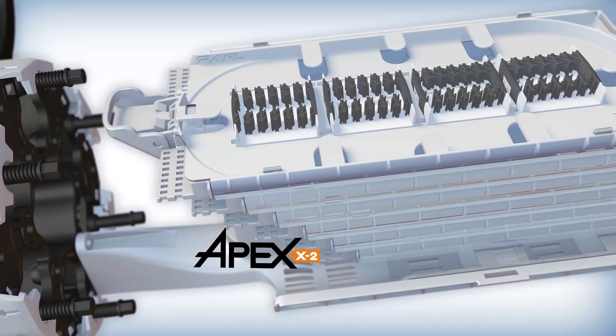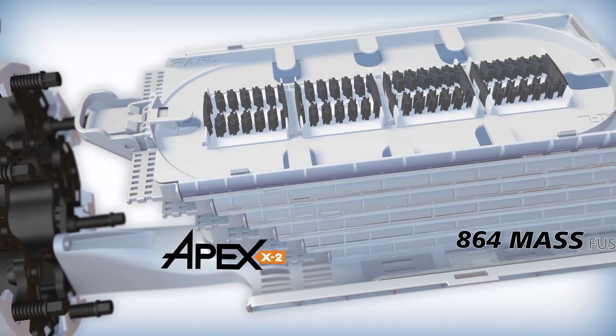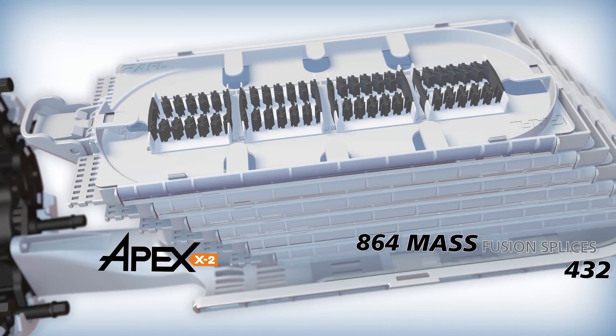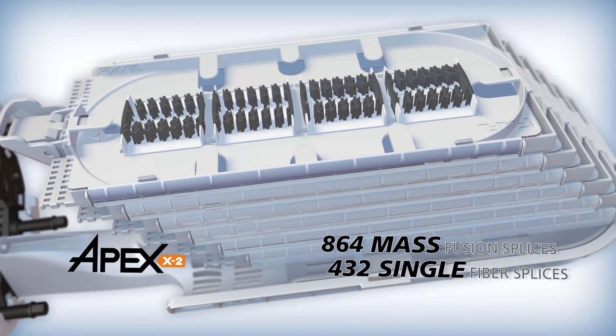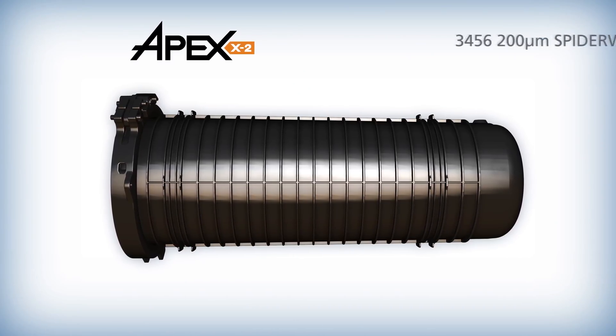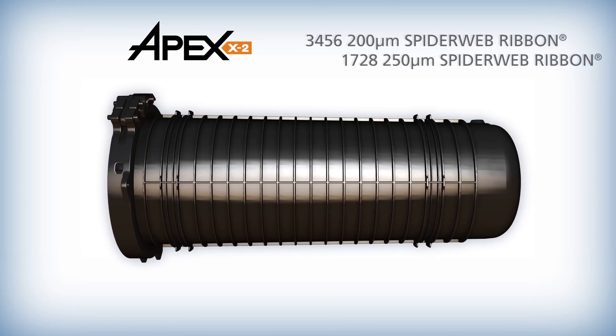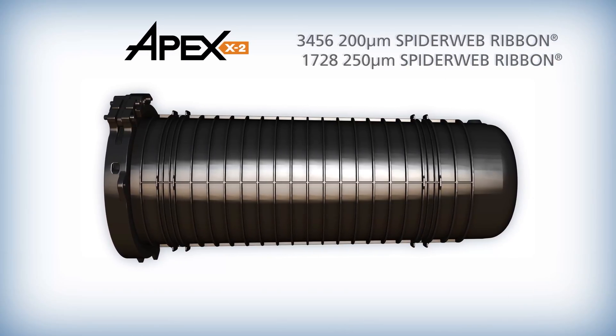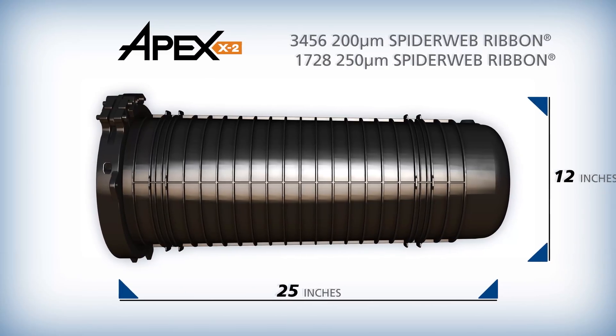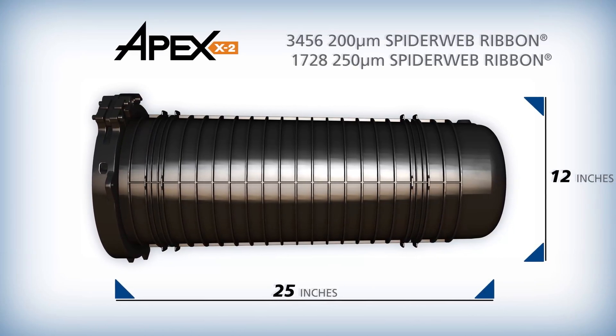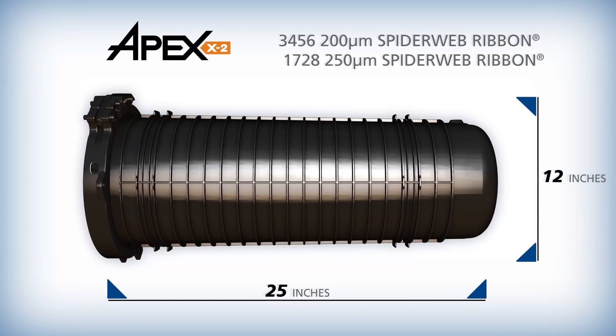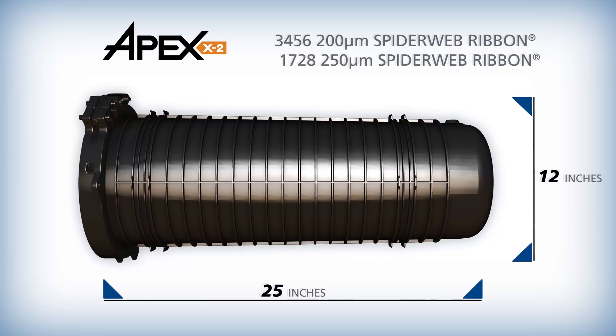The Apex X2 supports up to 864 standard ribbon fibers via mass fusion splicing or 432 single fusion splices. Coupled with AFL's wrapping tube cable powered by spiderweb ribbon technology, the Apex X2S can also accommodate 3456 fiber splices when using 200 micron fiber or 1,728 fiber splices when using 250 micron in a 12-inch diameter 25-inch long dome.